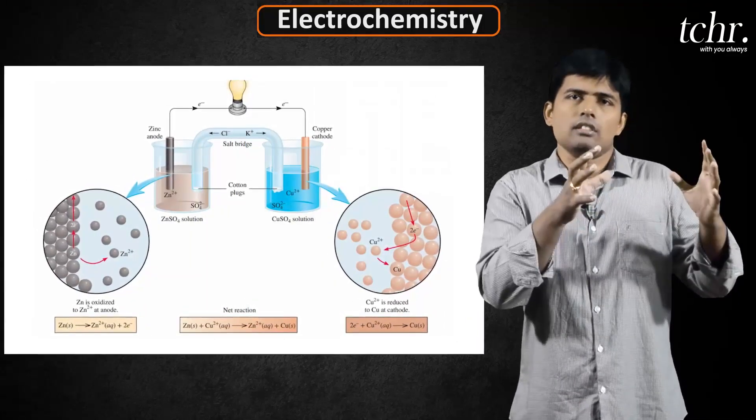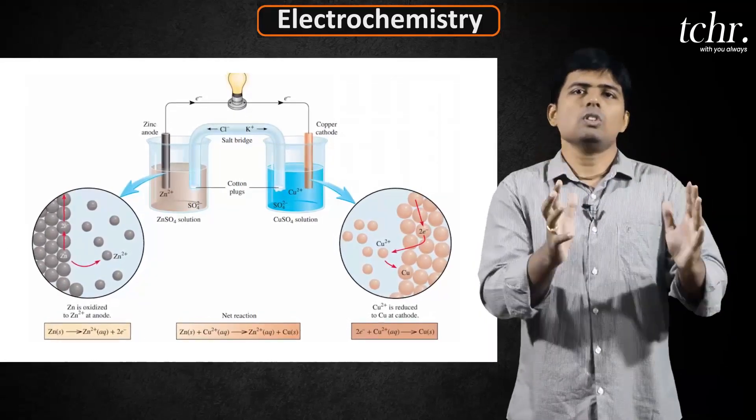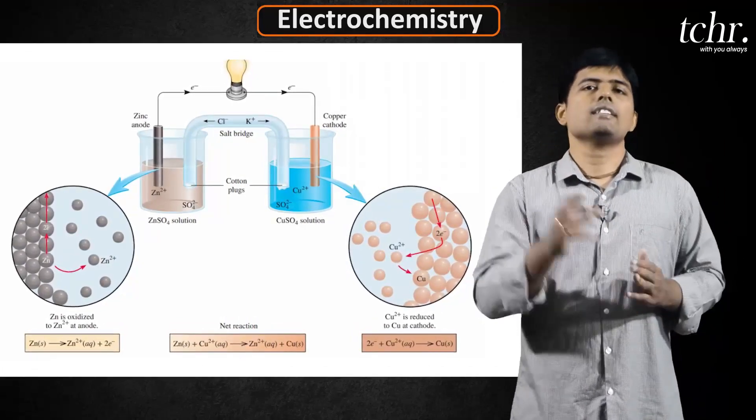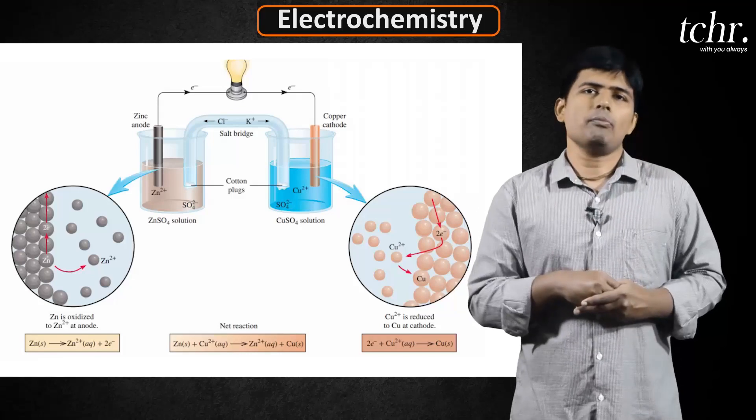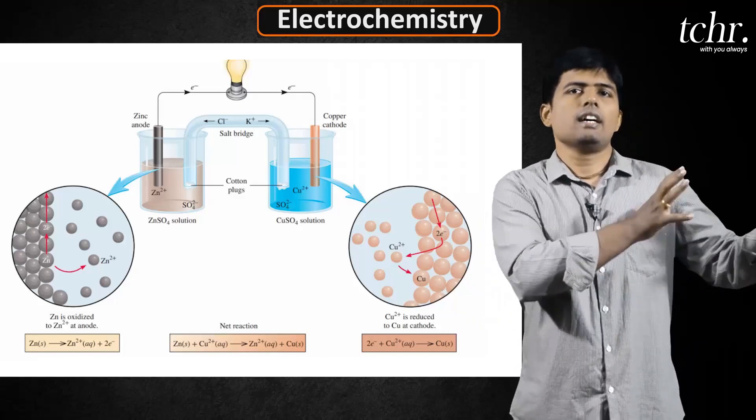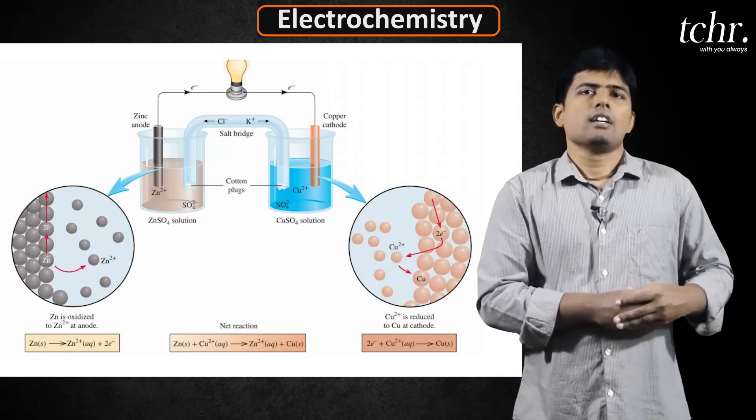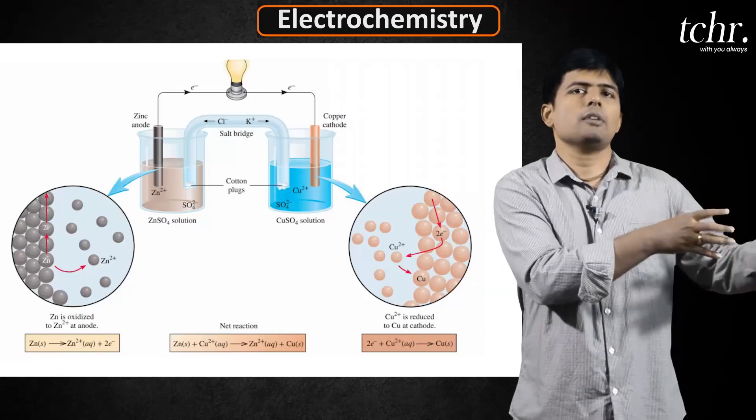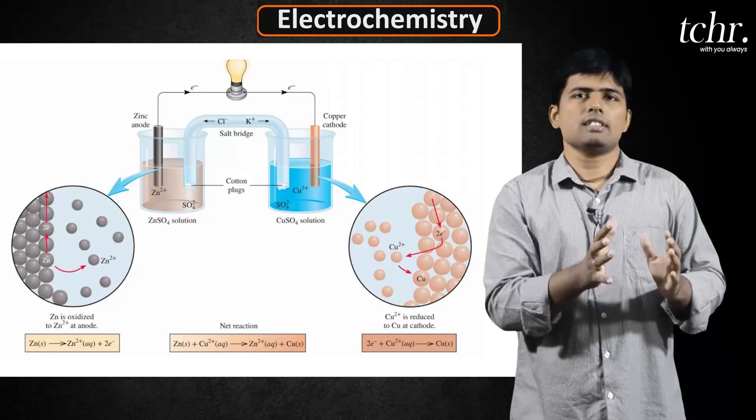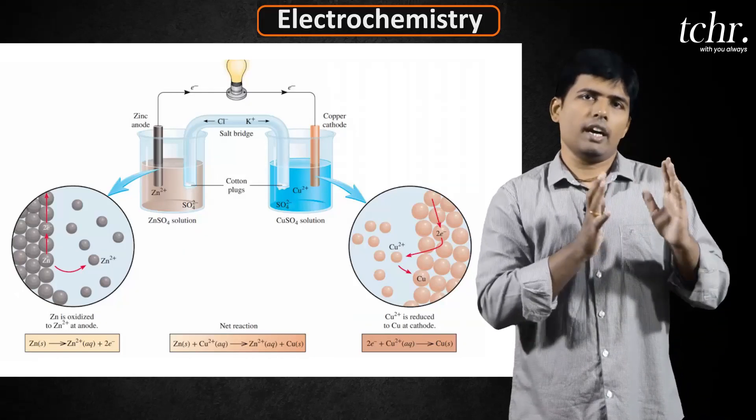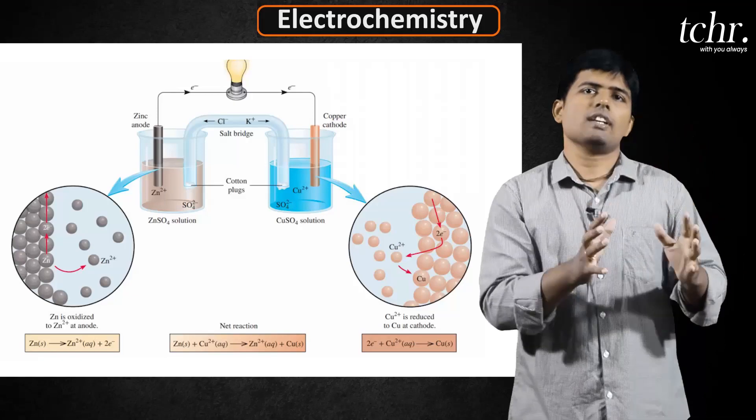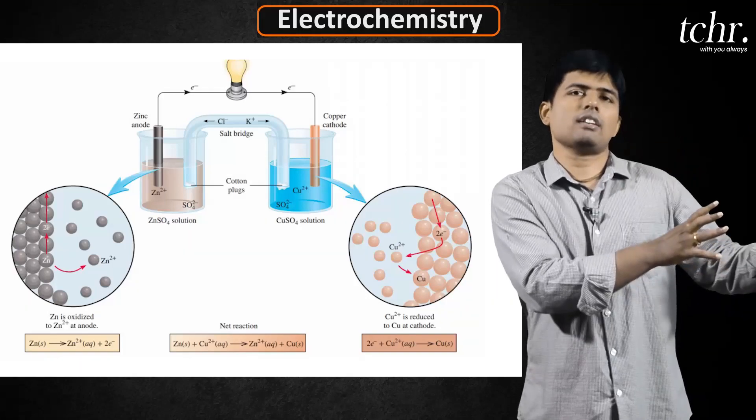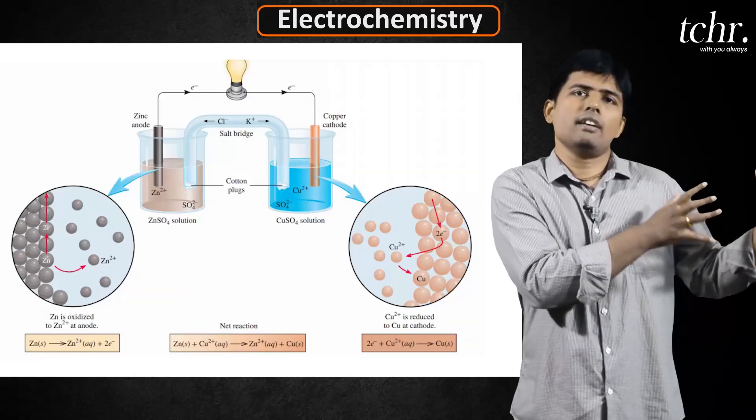In Daniel cell there are two half cells. One on the left side, the container has ZnSO4 and zinc rod or zinc strip is dipped in the ZnSO4 solution. Similarly right side, the cathode, a copper electrode is dipped in copper sulfate. You have two half cells, left side we have anodic half cell or the half cell in which oxidation takes place. And on right side, we have copper sulfate and copper electrode that is cathode and there reduction takes place.